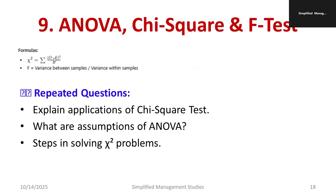The chi-square formula is Σ[(O − E)² / E]. This is very important. F-test is variance between samples divided by variance within samples. Important questions: explain the applications of chi-square test; accepting or rejecting the hypothesis is done based on this formula. What are the assumptions of ANOVA — that is also very important. Also remember the steps for solving chi-square problems.